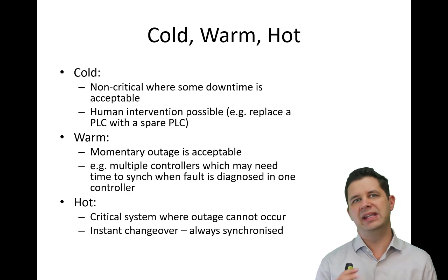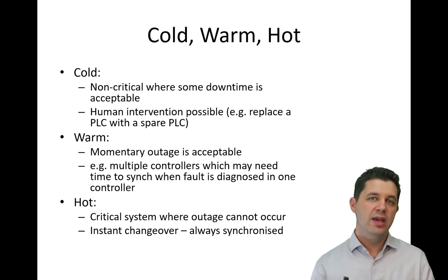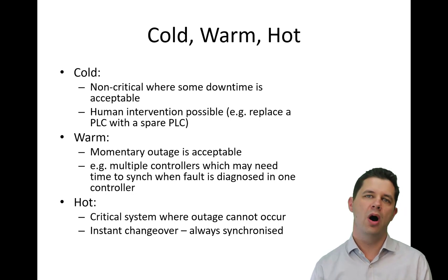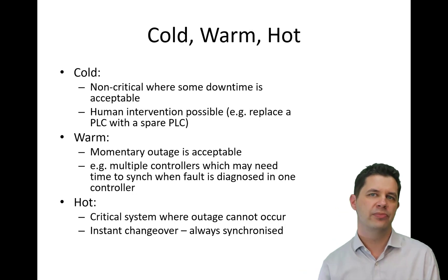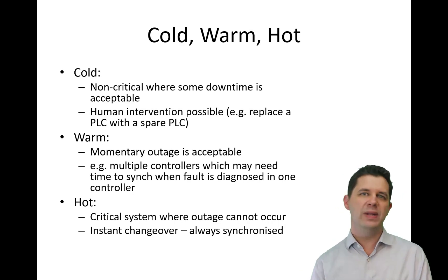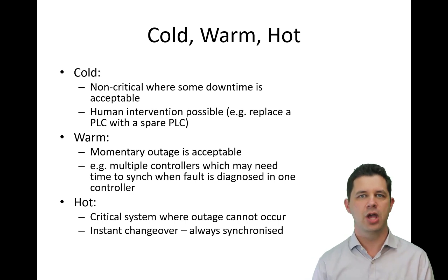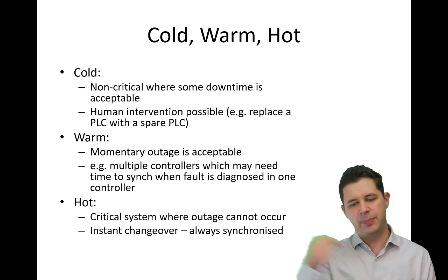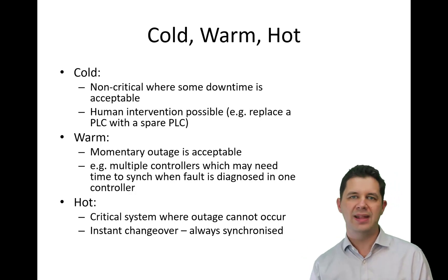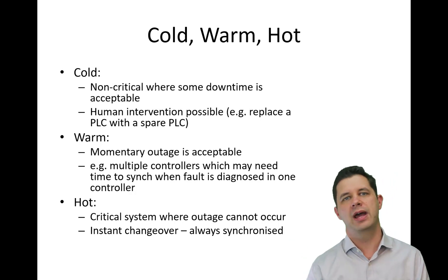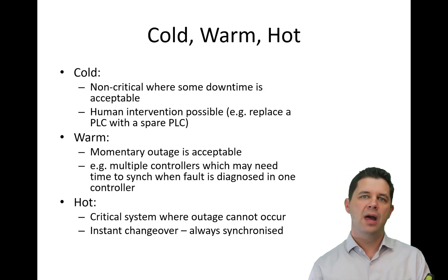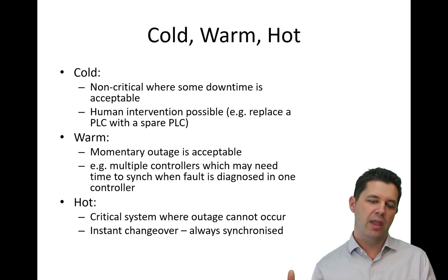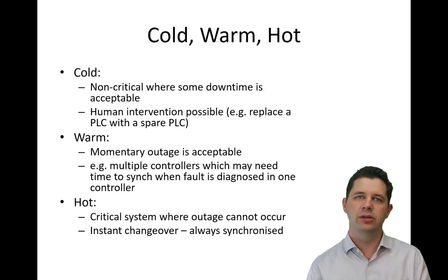There are different ways that we can implement redundancy, and we specify these as cold, warm, or hot. Cold redundancy is where things are non-critical, so we can have a little bit of downtime — that's acceptable — and it might require some human intervention. We might need to pull out a PLC and put a new one in, or manually start a diesel generator. We might have a bit of downtime, but it will be easy to get the system back online and working again.